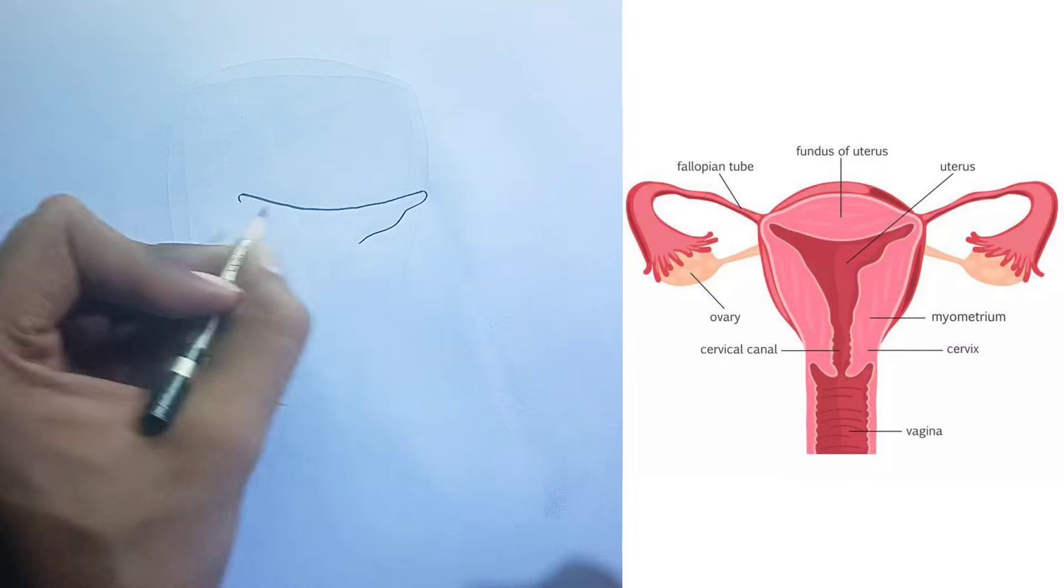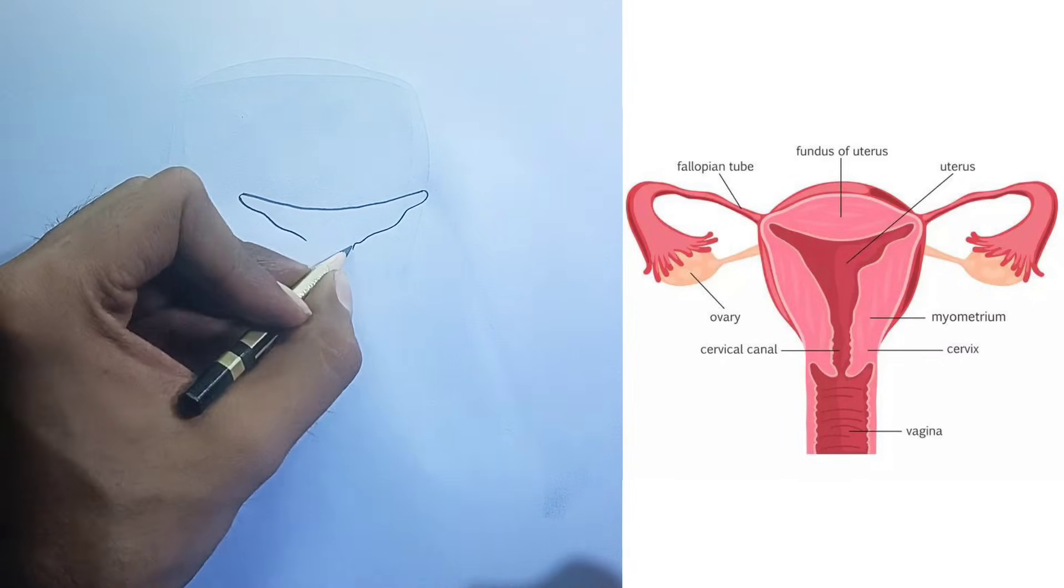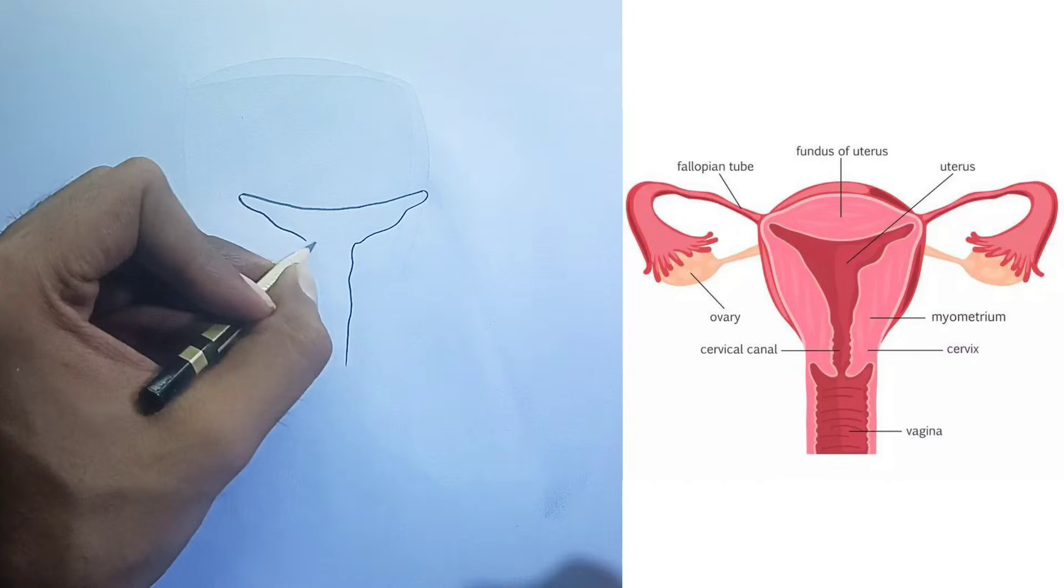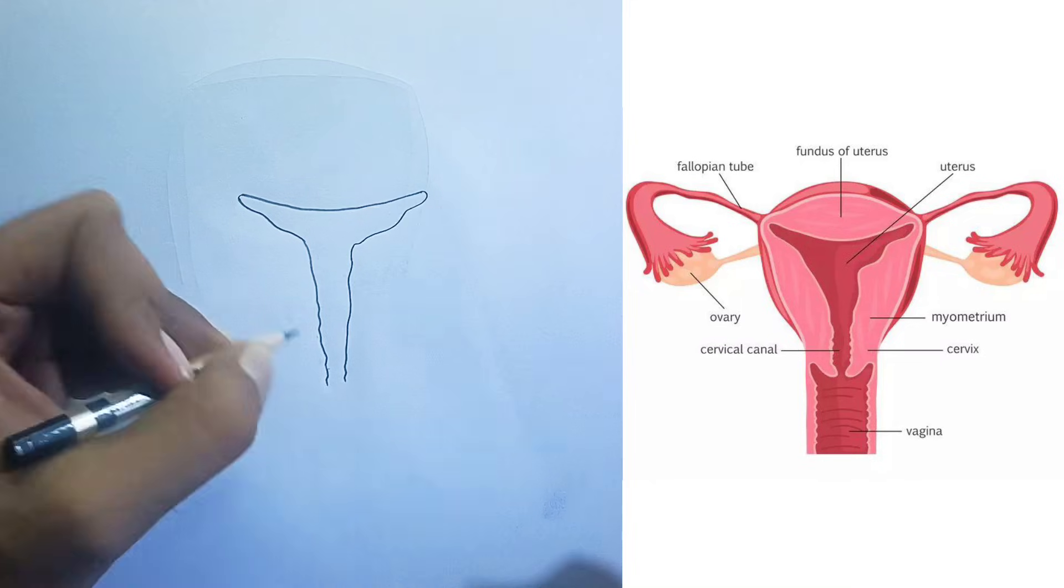Uterus. This is a hollow, pear-shaped muscular organ located in the female pelvis, between the bladder and the rectum. Its primary function is to nurture the developing fetus during pregnancy.